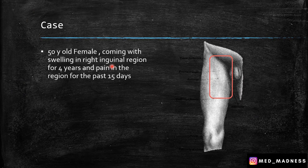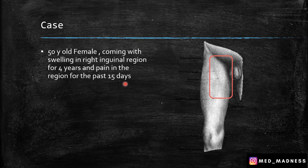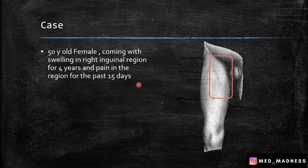Let me start with the case. A 50-year-old female coming with swelling in the right inguinal region for the past 4 years and pain in the region for the past 15 days. There are several differential diagnoses, and femoral hernia is one of our differential diagnoses. And this is the area of our study today.